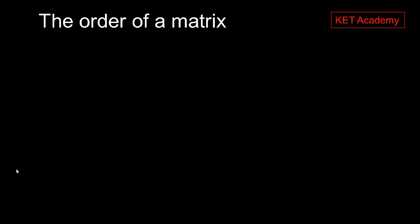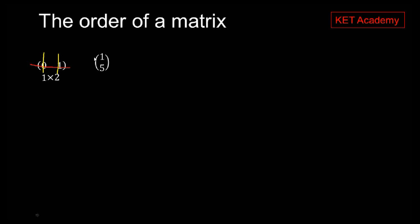Now let's take a look at the order of a matrix. The order of a matrix simply gives us the way in which a matrix is represented — that is, the ratio between the rows and the columns. For example, if there is one row and two columns, it's a one-by-two matrix. If there are two rows and one column, it's a two-by-one matrix.